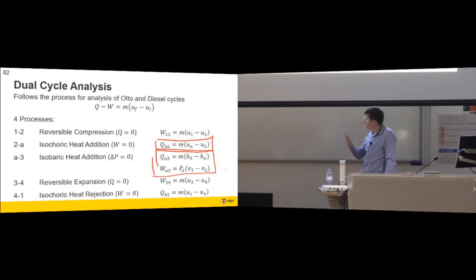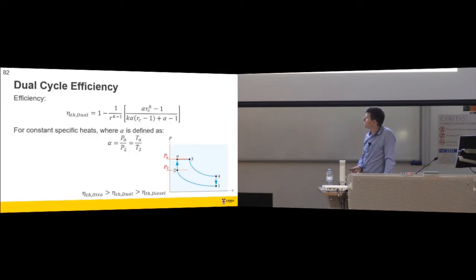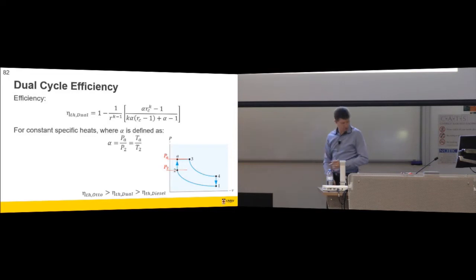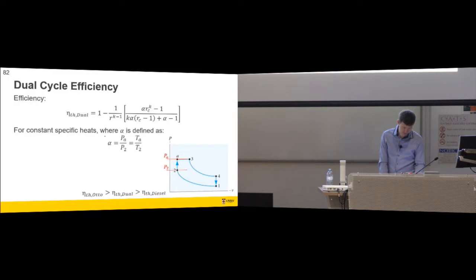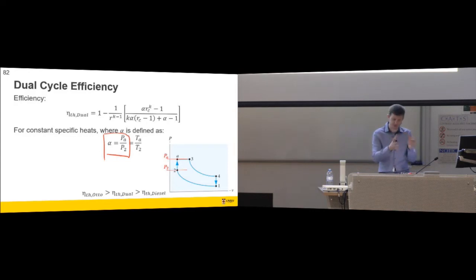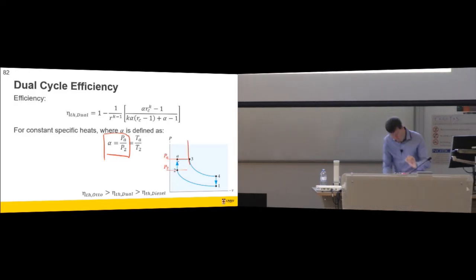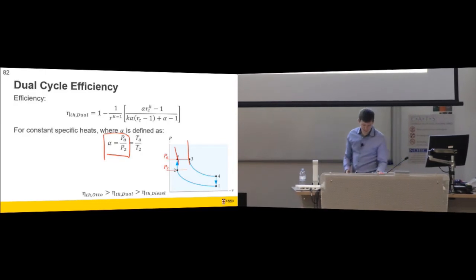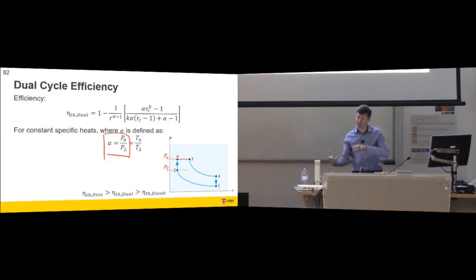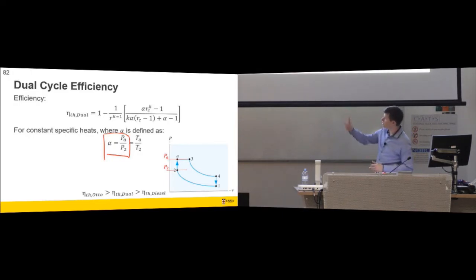Make sure you feel familiar, comfortable, and confident with those. We then need another term to be added, and that term is: how much of the heat is isochoric and how much is isobaric? So we need a cutoff ratio because the cutoff ratio tells us what the volume ratio is for the isobaric part, but now we need to know what the heat was.